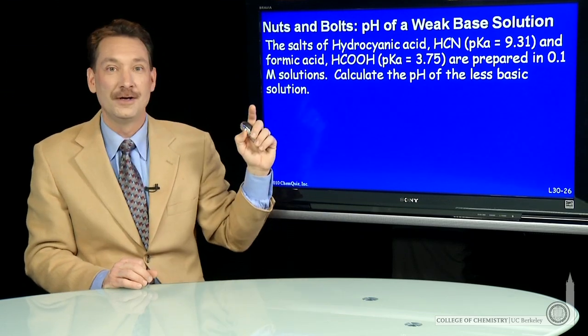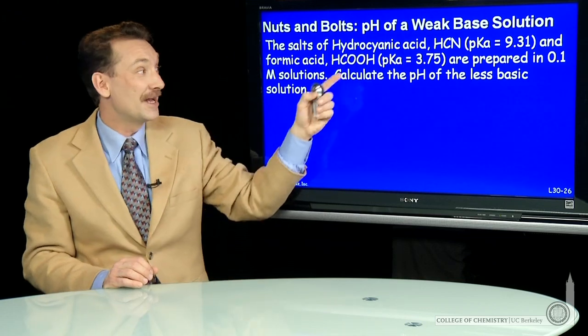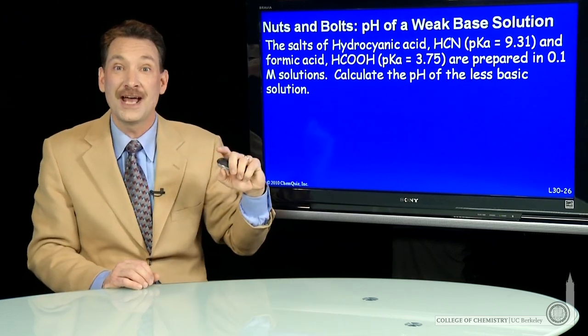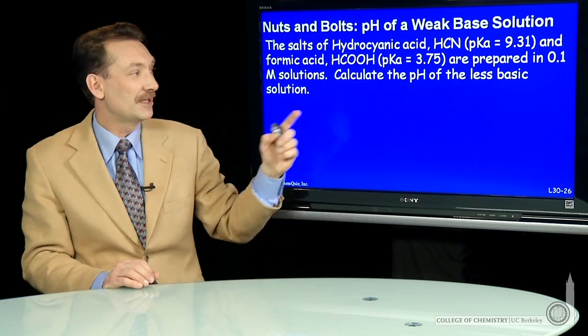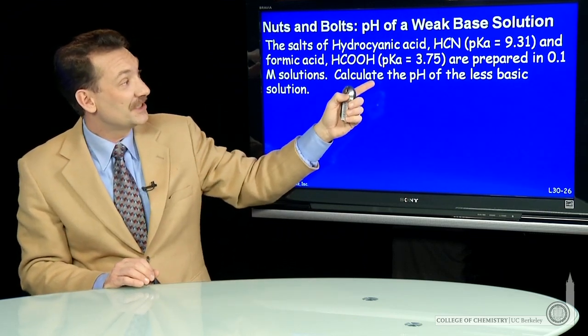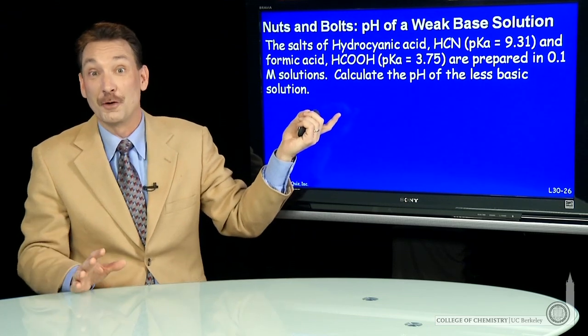So let's look at those two salts or conjugate bases, the cyanide ion and the formate ion, prepared at 0.1 molar. Which has the lower pH? And let's calculate that. So actually, I've said, which is less basic? Which has the lower pH?